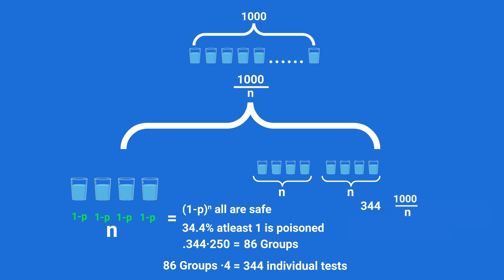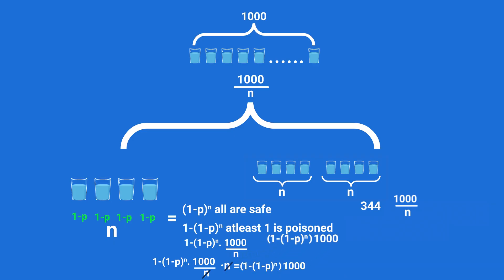These are the groups that are removed, meaning the percentage of groups that remain, where at least one is poisoned, is 1 minus that. Then if we multiply that by the 1,000 over n groups we started with, that tells us how many groups remain to be tested. Then multiply that by n drinks per group and we find the number of individual tests that must be done on top of the 1,000 over n.